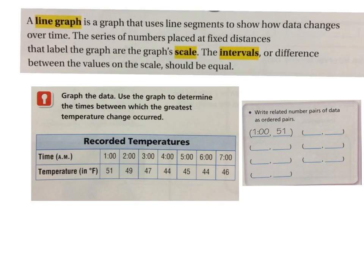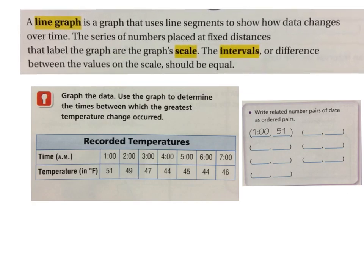A line graph is a graph that uses line segments to show how data changes over time. It's very important that we remember that line graphs show changes over time. The series of numbers placed at fixed distances that label the graph are the graph's scale. So the little tick marks you put on your x and y-axis, that's the scale. The intervals or the difference between the values of the scale should be equal, meaning you need to have evenly skip counted scales. Does that make sense? So I want you to think, how does this relate to science?